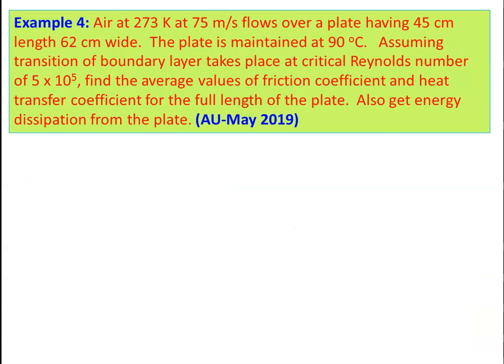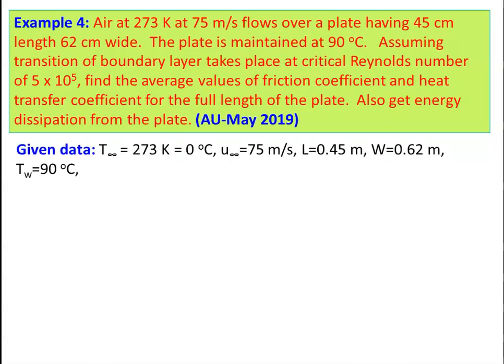Example 4: Air at 273 K and 75 m/s flows over a plate 45 cm long and 62 cm wide. The plate is maintained at 90°C. Assuming transition occurs at Re_crit = 5 × 10⁵, find the average friction coefficient, average heat transfer coefficient, and energy dissipation from the plate. Given: T∞ = 0°C, U∞ = 75 m/s, L = 0.45 m, W = 0.62 m, Tw = 90°C.